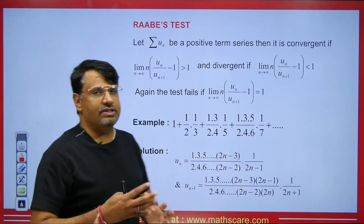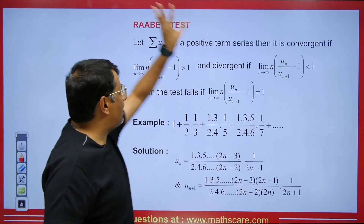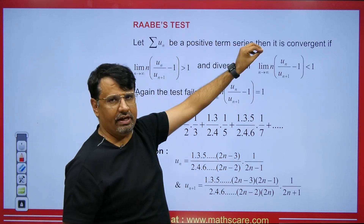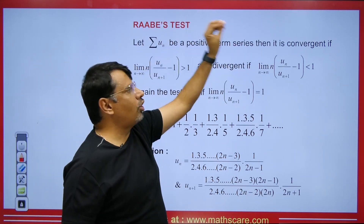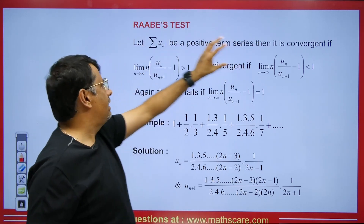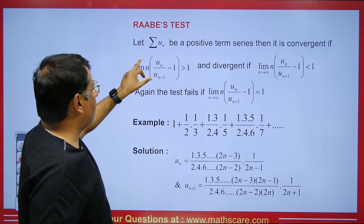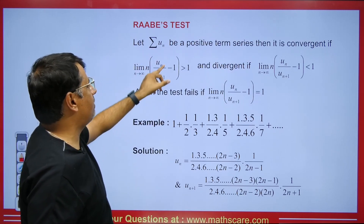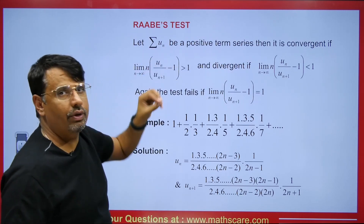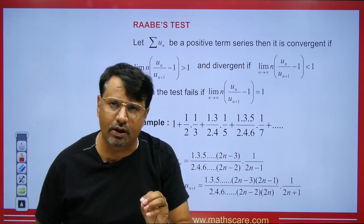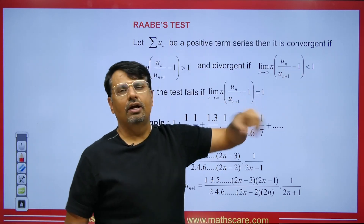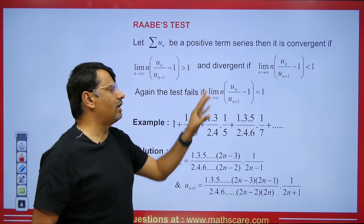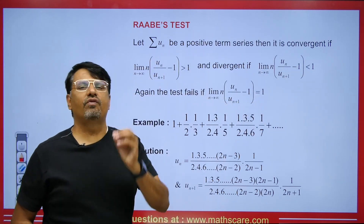So, let's talk about the Raabe's Test. If we are given an infinite series which consists of positive terms, then it will be convergent if the limit as n tends to infinity of n times (u_n / u_{n+1} − 1) is greater than 1. If its value is less than 1, then the series will diverge.